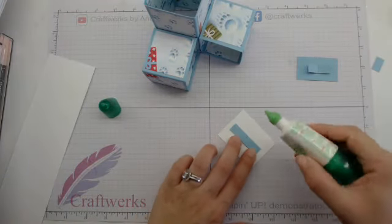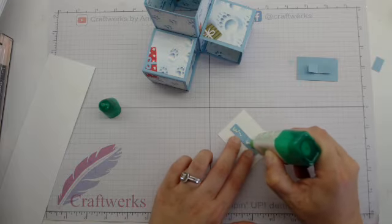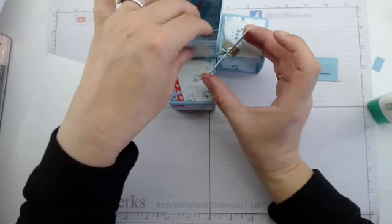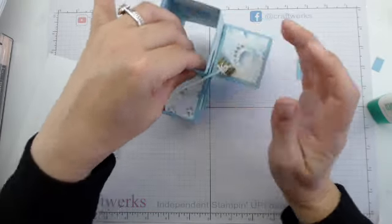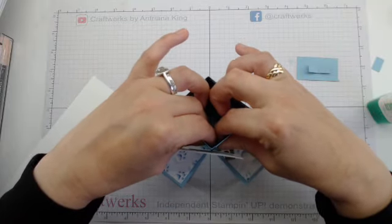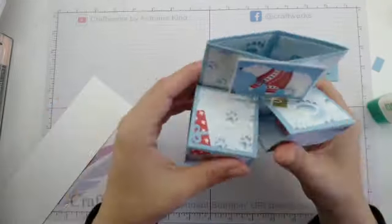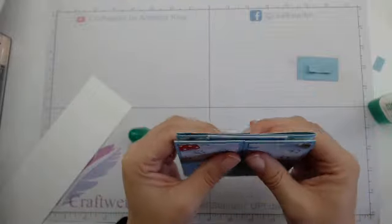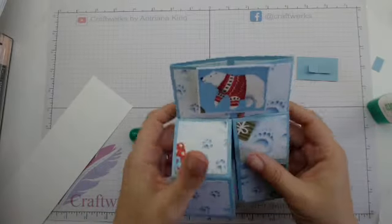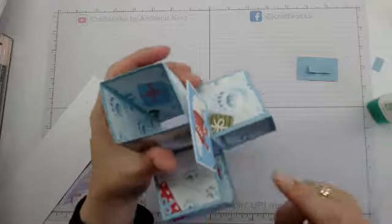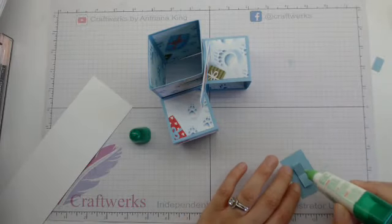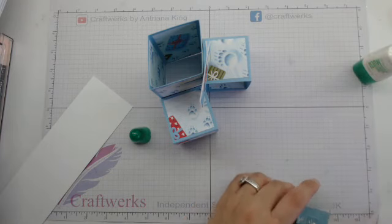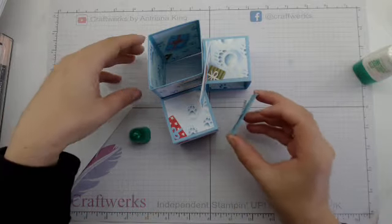Now what we're going to do is these two pieces here - pop glue on those. Make sure your image is round the right way and pop those like that so it all folds flat. Just double check it's straight. And now we're going to pop sentiment in here, exactly the same way.